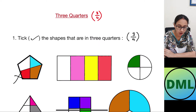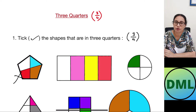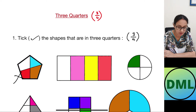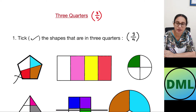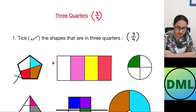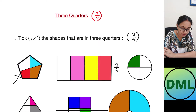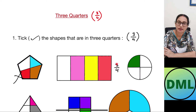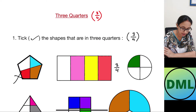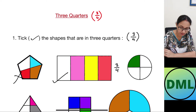Now let's see the next shape — this is my rectangle. Have I divided my shape into four equal parts? Yes — one, two, three, and four parts. How many parts are shaded? One, two, and three parts are shaded. So that means this figure is three by four — out of four parts, three parts are shaded. This is my answer.